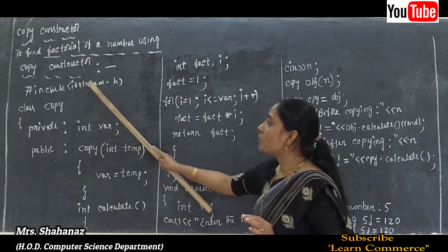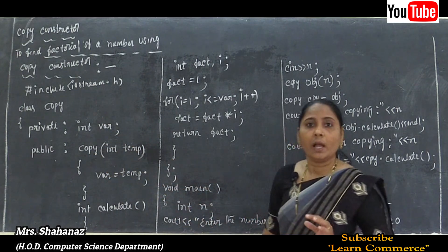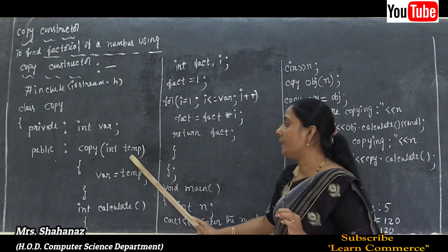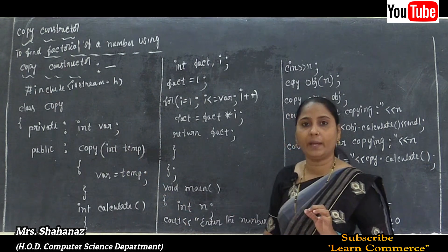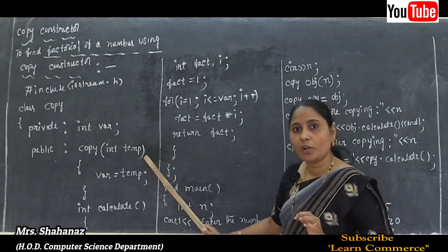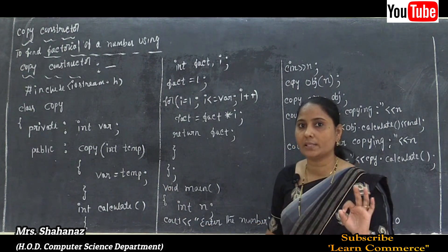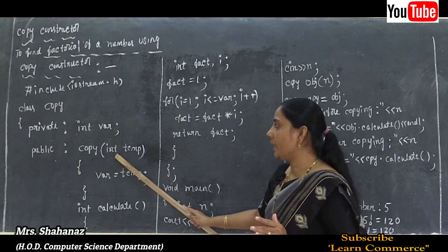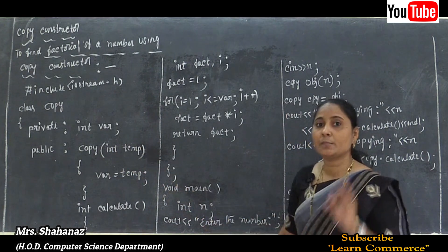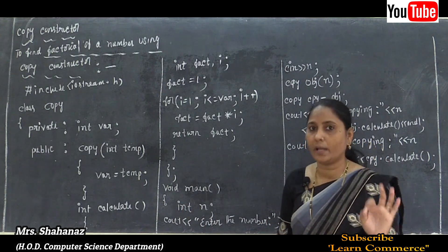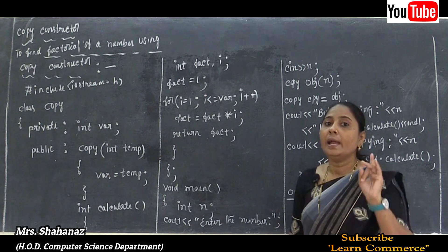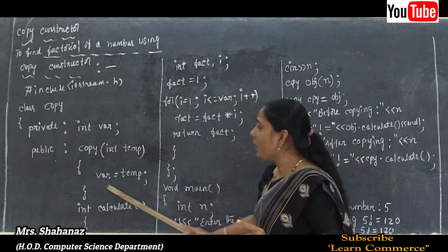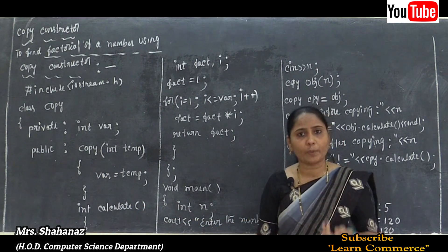The copy constructor is declared under the public access specifier. It takes one argument named 'tmp', declared with data type int. Since there is no semicolon at the end, this is a definition of the copy constructor — not just a declaration. Remember: no semicolon means it is the definition of the function.